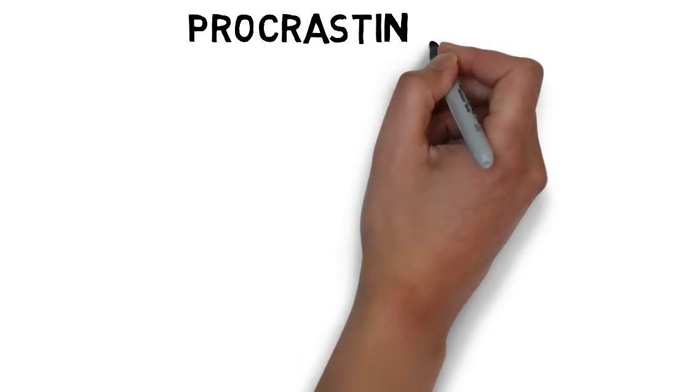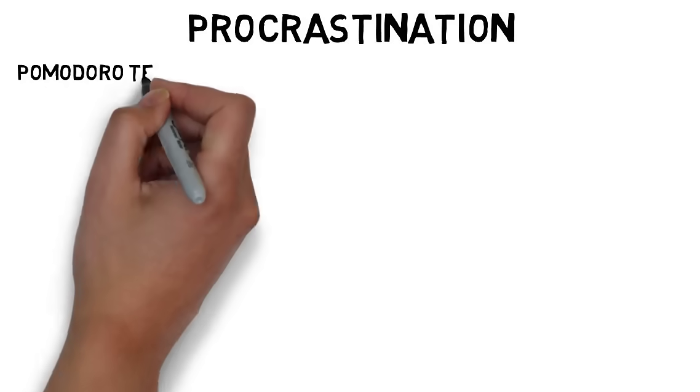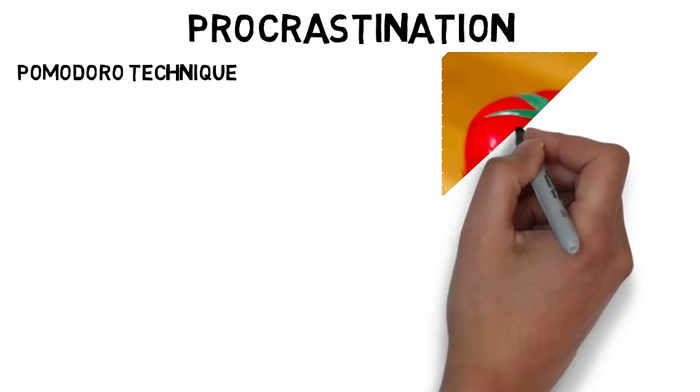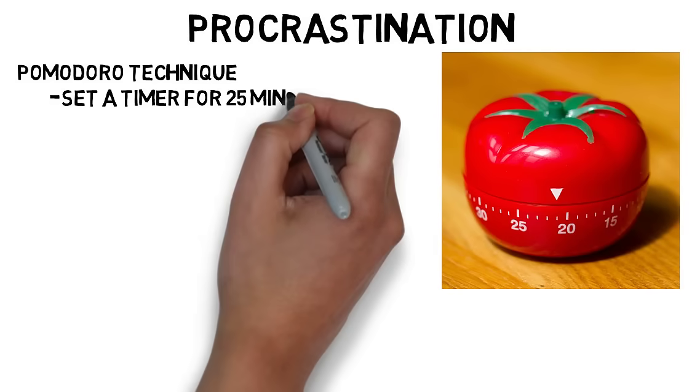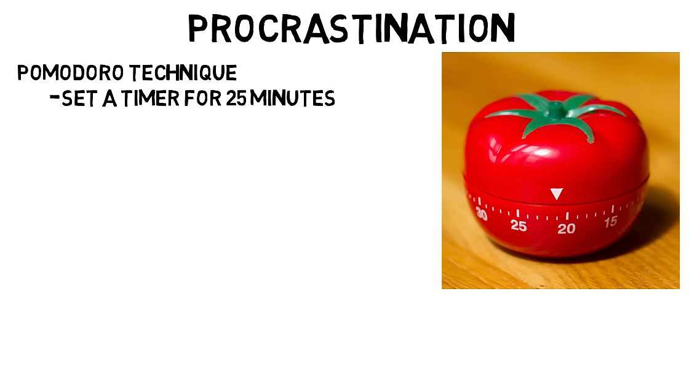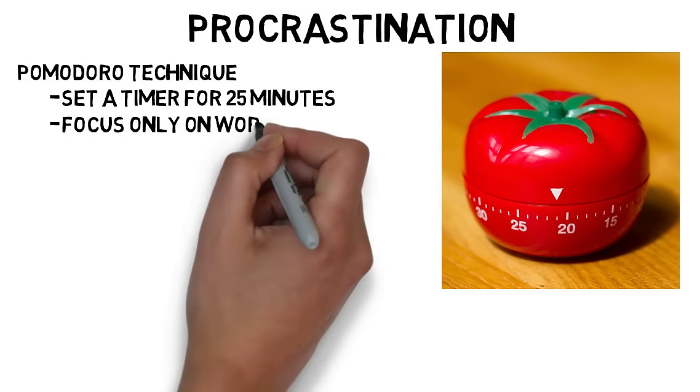Now, in another video I talked about procrastination, but this book had a few takes on it as well, and I wanted to offer some more advice for those who have issues with procrastination. One thing to try is the Pomodoro Technique, which there are many videos on, but essentially to sum it up, set a timer for something like 25 minutes, maybe a little less or more, but then solely focus on work for that time.